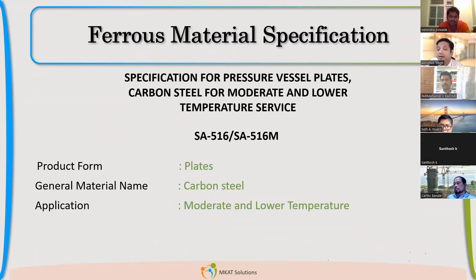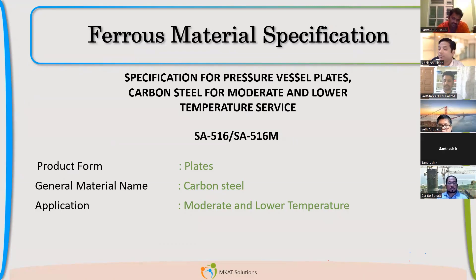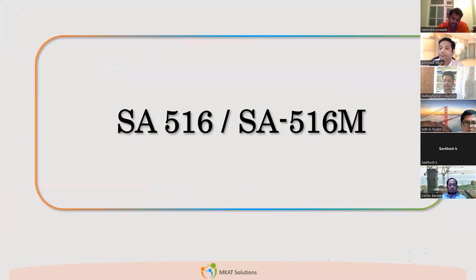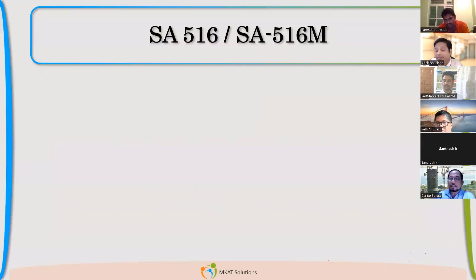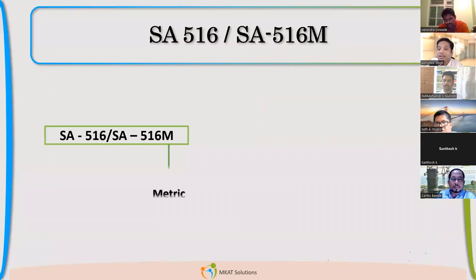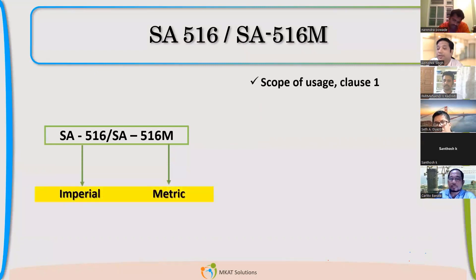You also see that the 'M' written here — SA 516M — that is for metric. So you will get both customary and metric information in this specification. Let us now dive deep into the SA 516M material specification. As I said, both metric and inch units will be covered here.